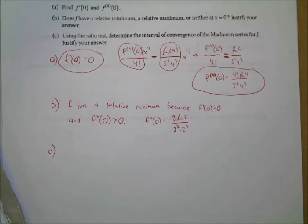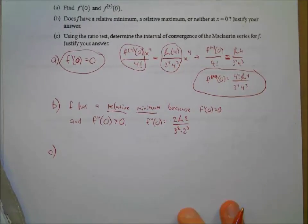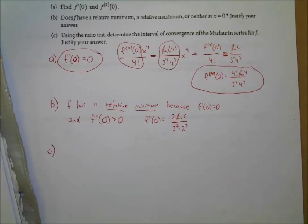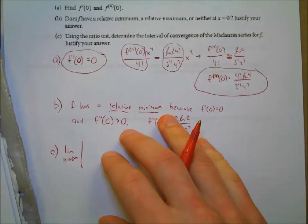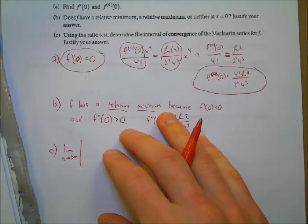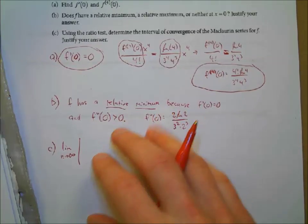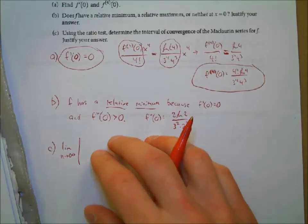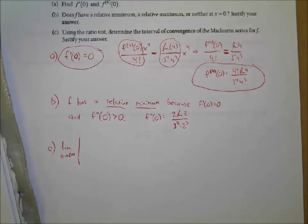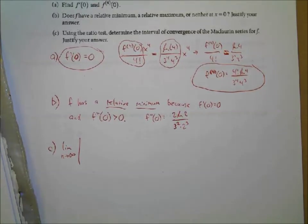Letter C — using the ratio test, determine the interval of convergence of the Maclaurin series for F. We set up the limit as n approaches infinity of the absolute value of the ratio: natural log of n plus one times x to the n plus one, over three to the n plus one times n plus one cubed, multiplied by the reciprocal: three to the n times n cubed over natural log n times x to the n.